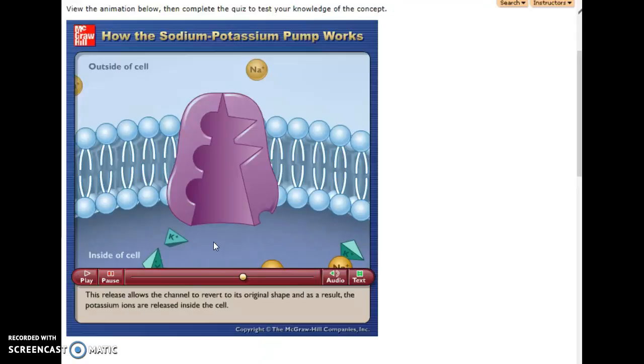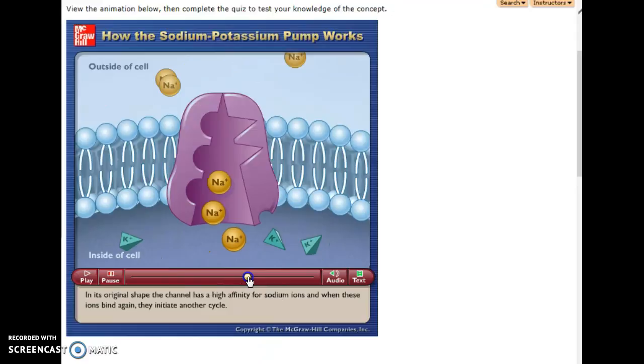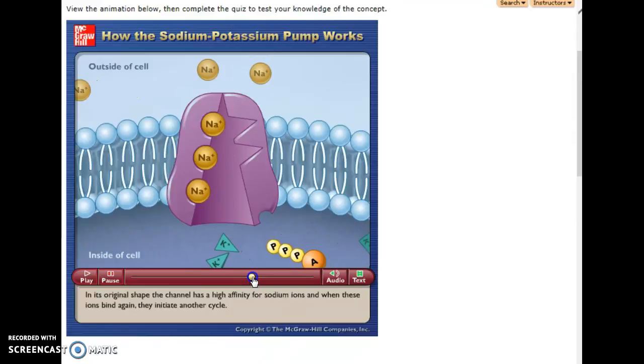There's a little mnemonic device that I use to help me remember this information and it's NAOKIN. N-A-O-K-I-N. NAO stands for sodium out because this pump pumped sodium out and potassium which is K comes in. So that is always how it works via the pump. Sodium will always be pumped out and there's three of them that get pumped at a time compared to potassium which gets pumped into the cell and there's only two of them.